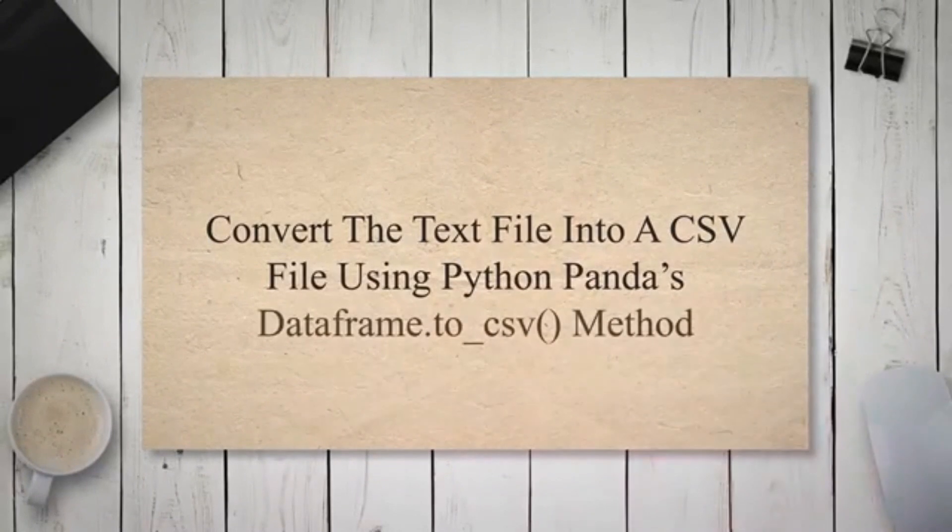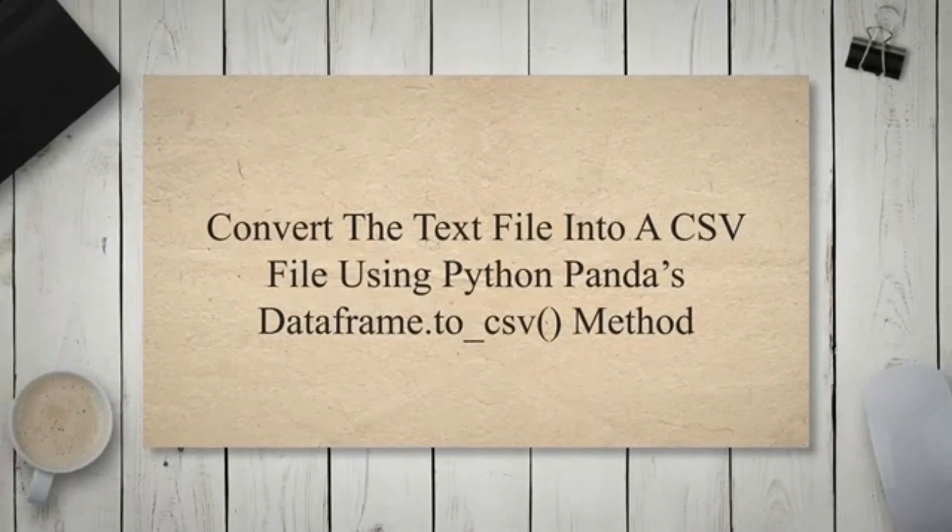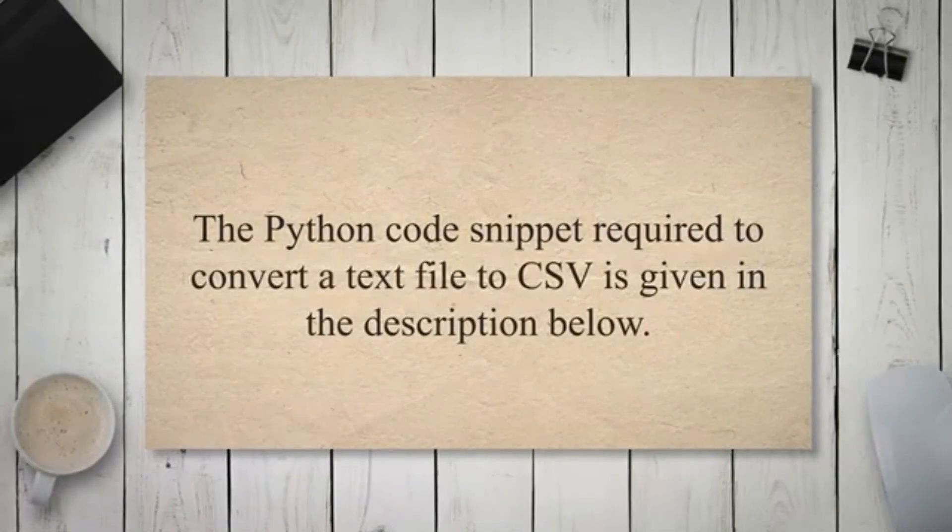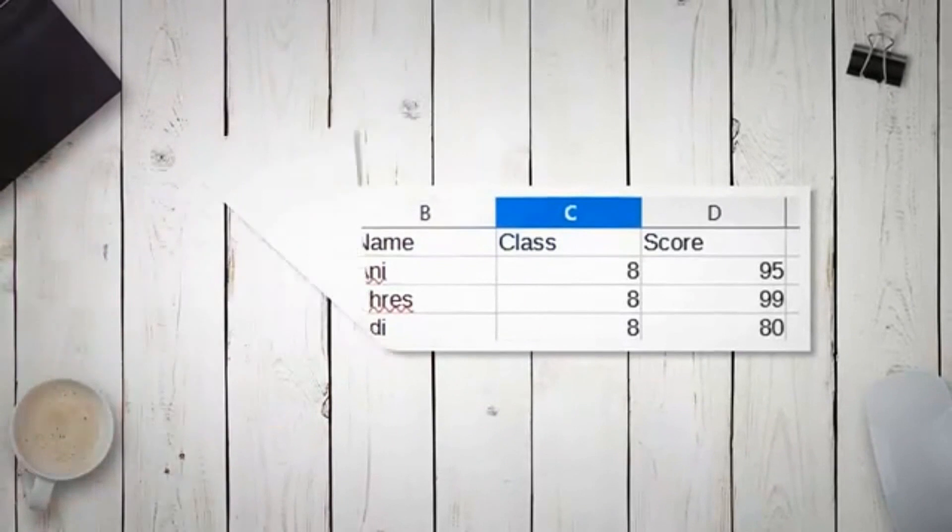Convert the text file into a CSV file using Python Pandas DataFrame.to_csv method. The Python code snippet required to convert a text file to CSV is given in the description below. Here's how the outputted CSV file would look.